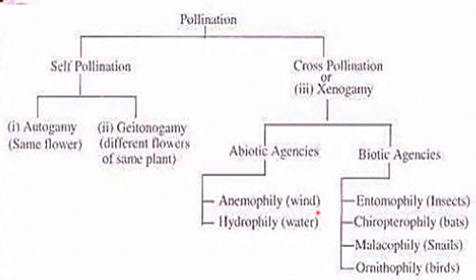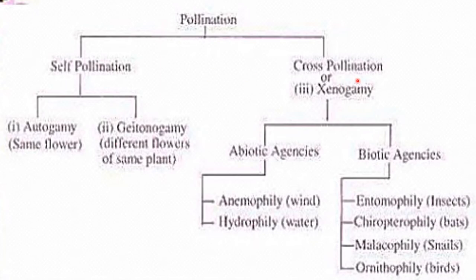If wind is involved in cross pollination, it is called anemophily. If water is involved, it is called hydrophily. In case of biotic agencies: if insects are involved it is called entomophily, bats means chiropterophily, snails means malacophily, birds means ornithophily. This is how both self pollinated and cross pollinated crops are classified.